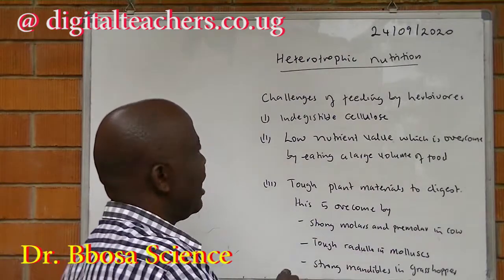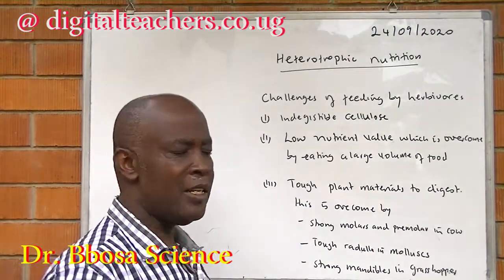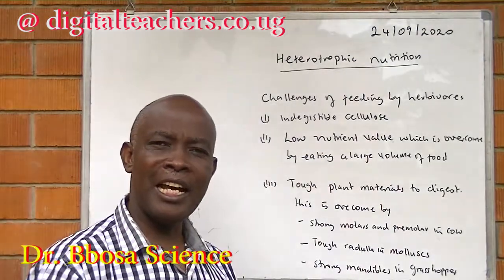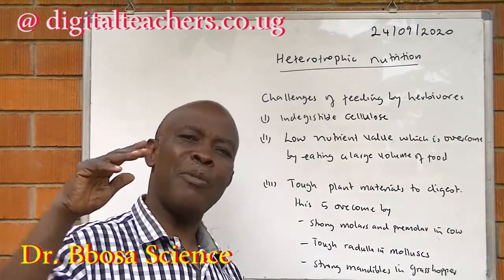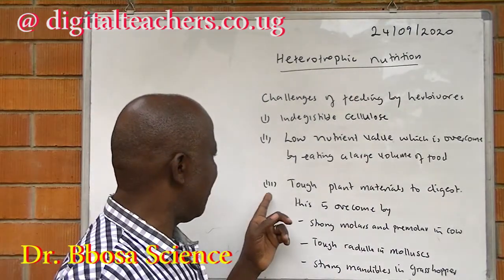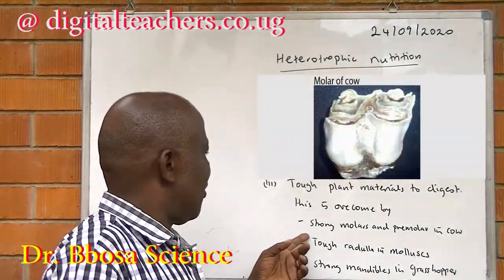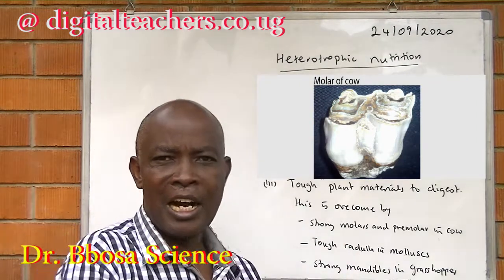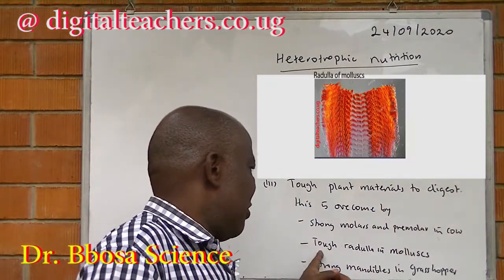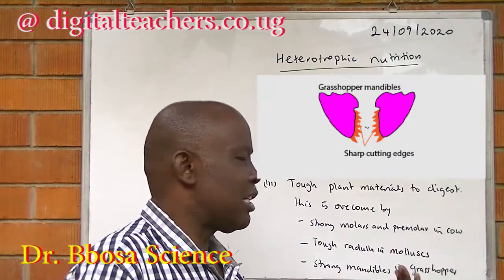The second challenge faced by herbivores is the low nutrient content of plant materials. This is overcome by herbivores eating large volumes of food — for example, a cow can eat from morning until evening without stopping. The third problem is tough plant materials to ingest. This is overcome by strong molars and premolars in cow and sheep, and strong mandibles in grasshoppers.